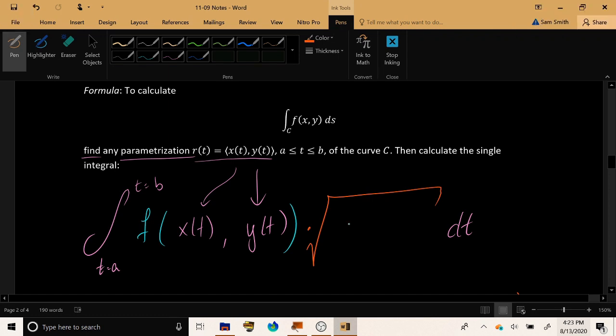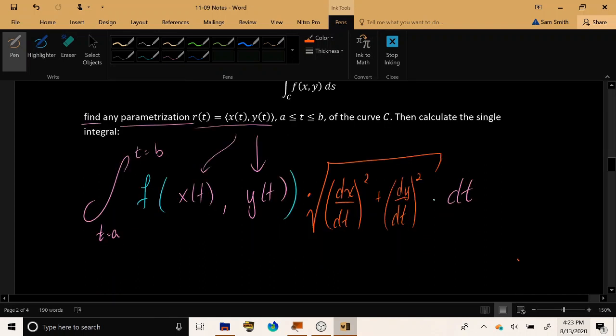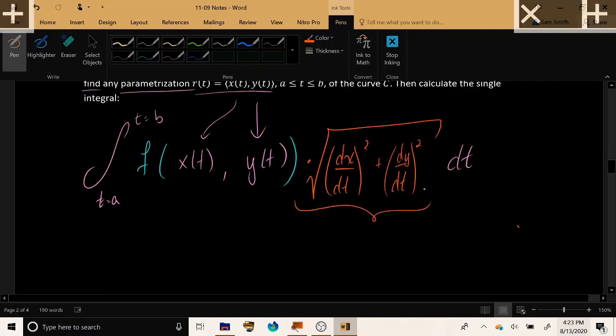Just like we did in our triple and double integrals, multiply that by essentially the speed, r prime of t, where we have dx/dt, that derivative squared, and we have dy/dt, that derivative squared. So, put another way, this red quantity is the speed, r prime of t.